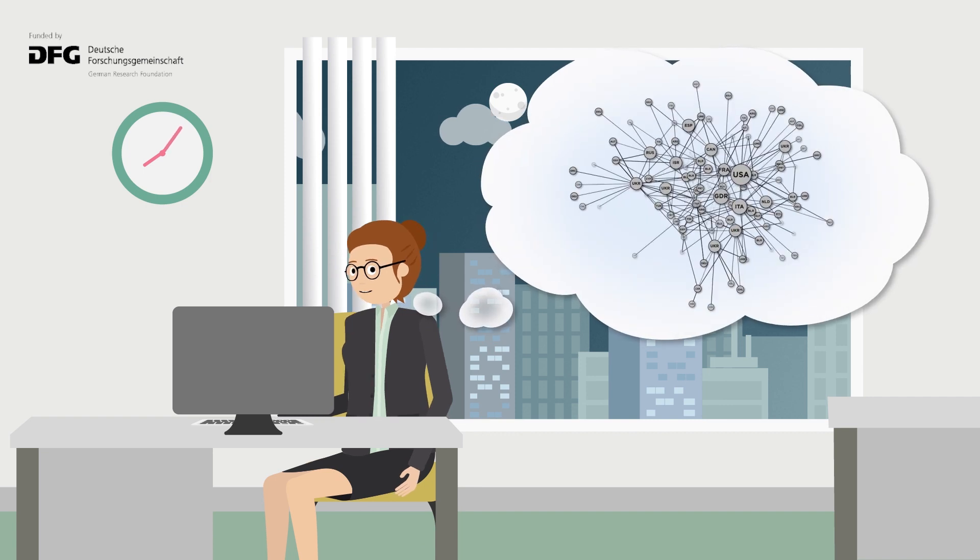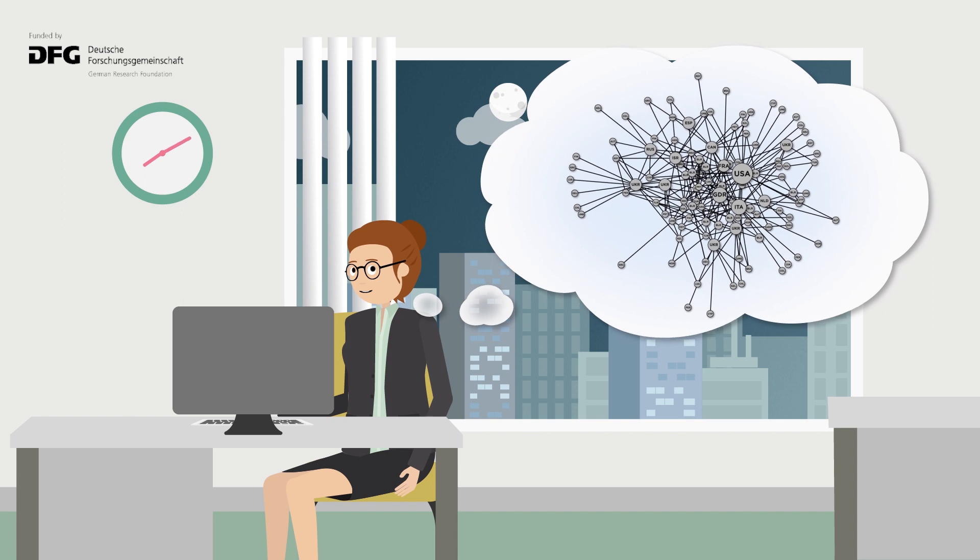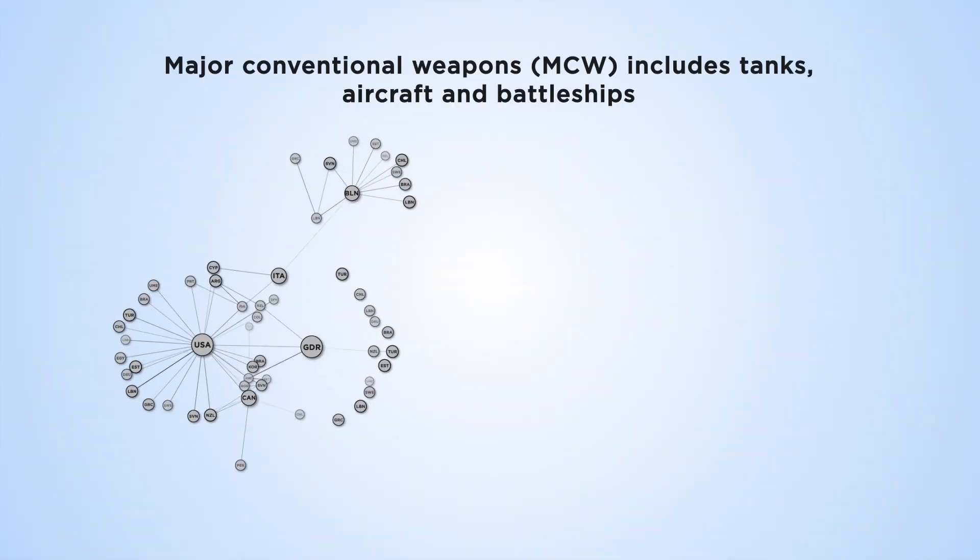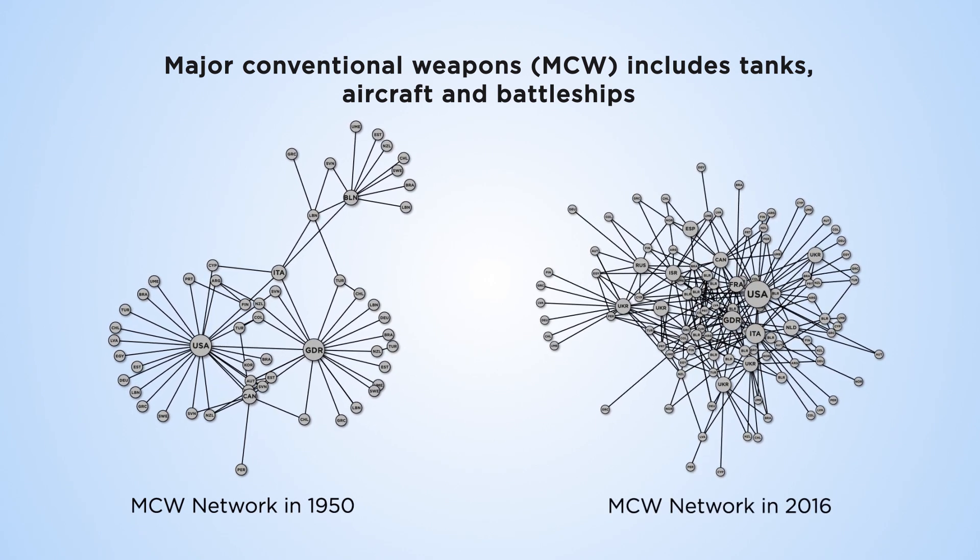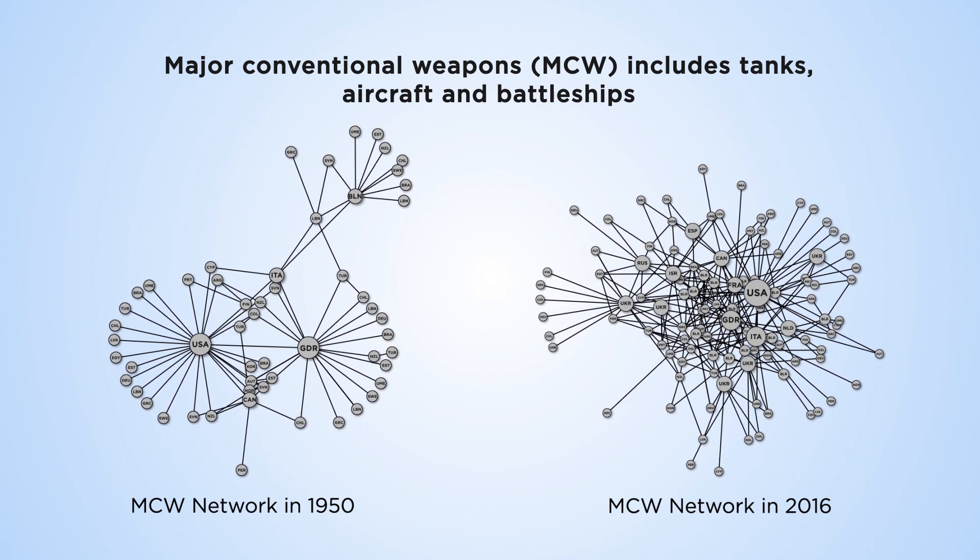While the analysis of trade networks is more of a common topic, the analysis of arms trades as a security-related network is a new concept. The trade networks of major conventional weapons have changed over the years, especially after the end of the Soviet Union, which gave birth to a new global order.